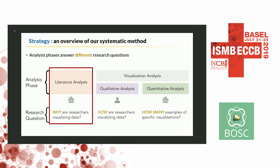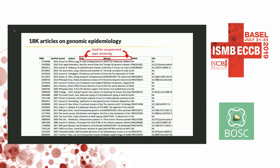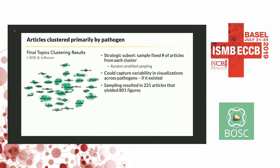In the literature analysis phase, I got about 18,000 articles from PubMed that were about genomic epidemiology. I took the titles and abstracts and came up with an unsupervised topic clustering method. What I found was that the biggest signal in the data is basically pathogen — maybe people visualize pathogens differently since they have different transmission routes and effects. To capture this variety, I used these topic clusters as strata in a sampling schema, sampling 221 articles across the 18,000, resulting in 801 figures for further analysis.